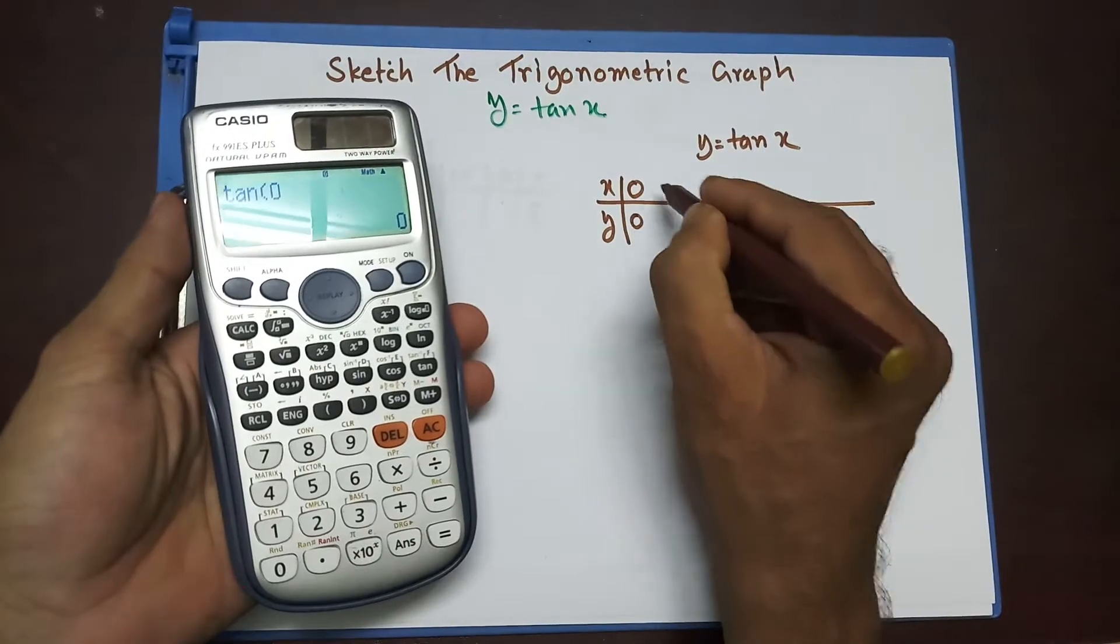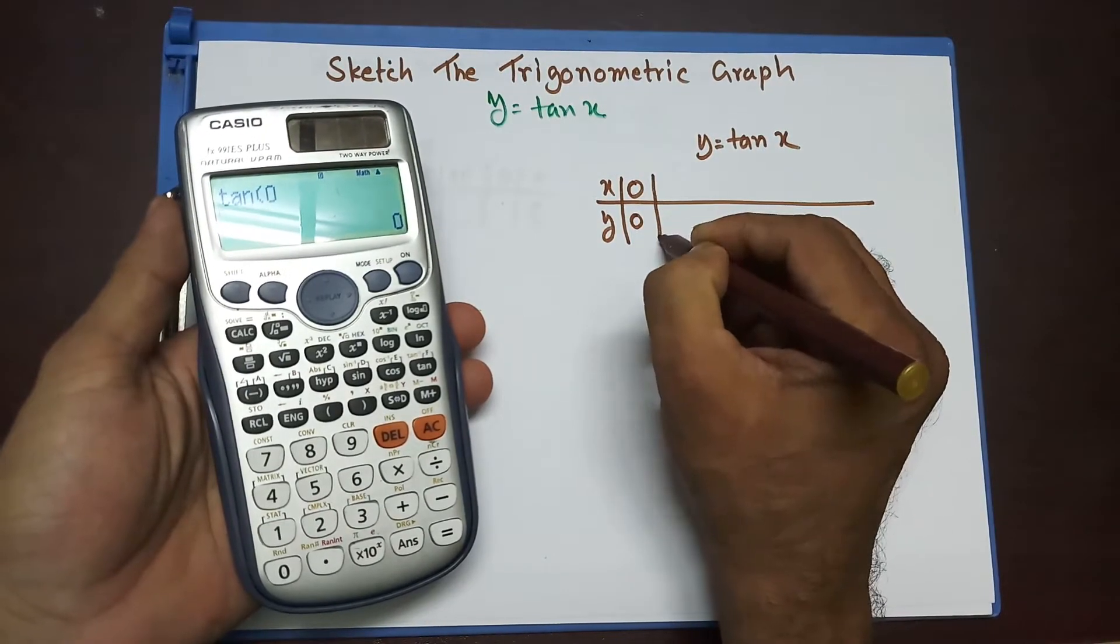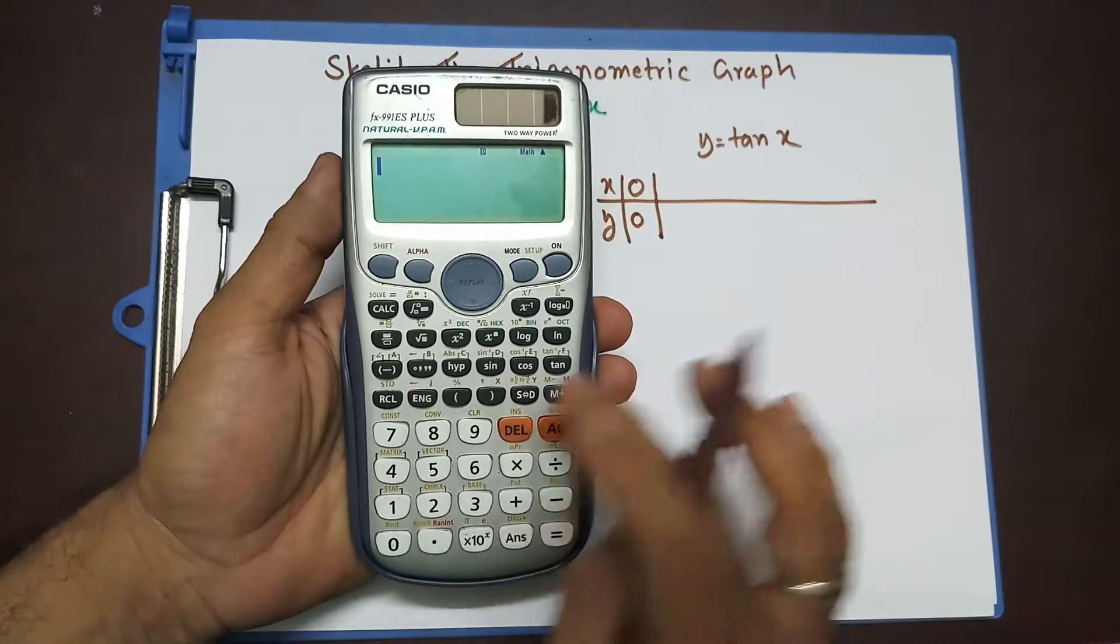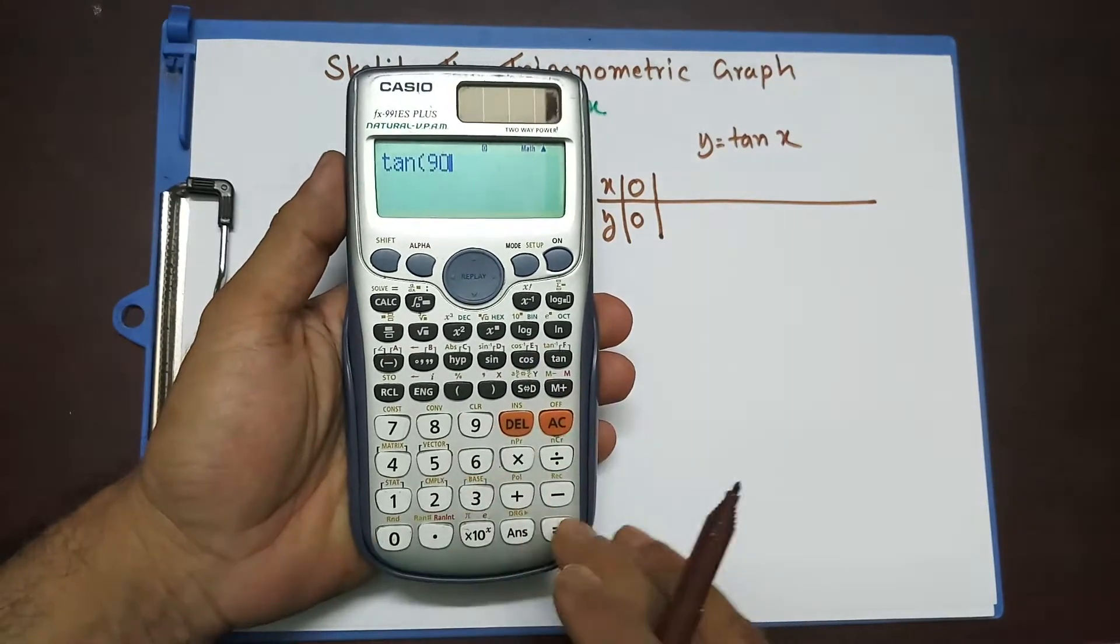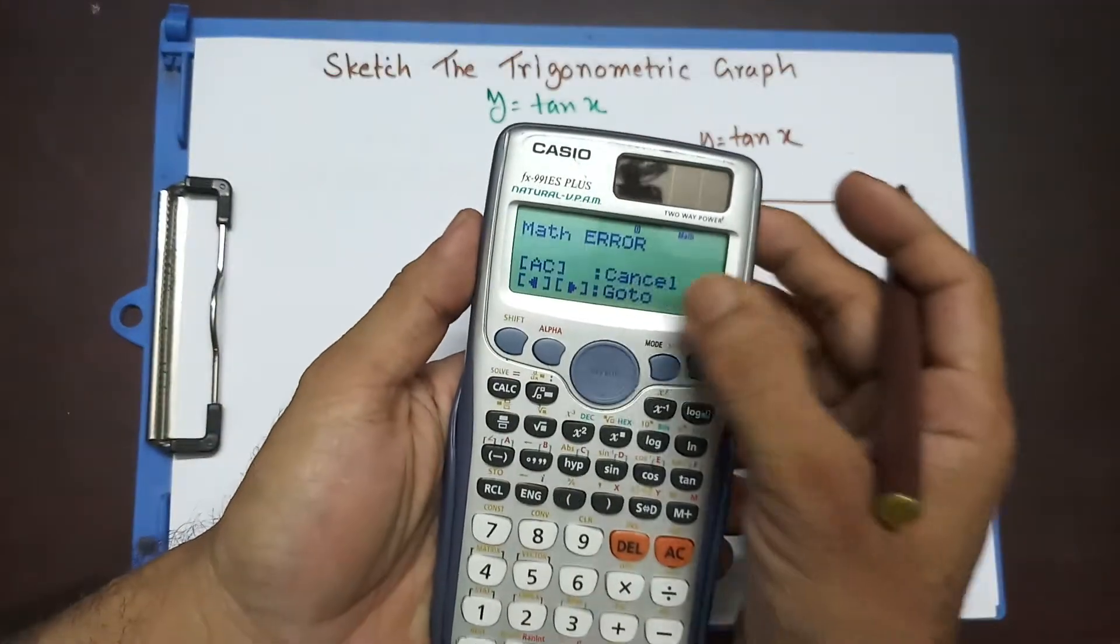Now, I'm going to try for tan 90 degree. Now, tan 90 degree, I'm getting math error. Now, why is it math error? Let's find out.